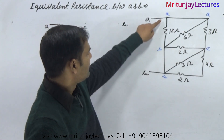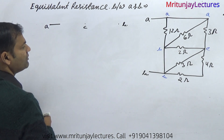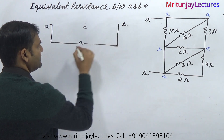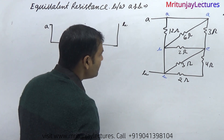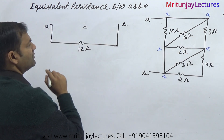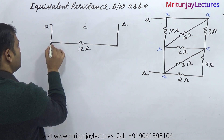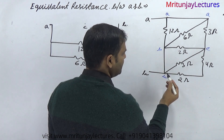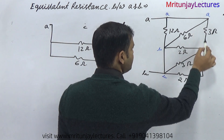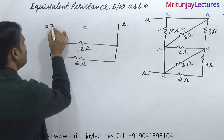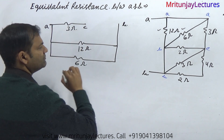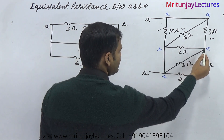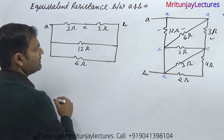A and B that is 12 ohm. Now another way, A and B that is 6 ohm. Now look — A and C: this one and this one. A and C that is 3 ohm. B and C that is 2 ohm. C and B that is 3 ohm, B and C that is 3 ohm.